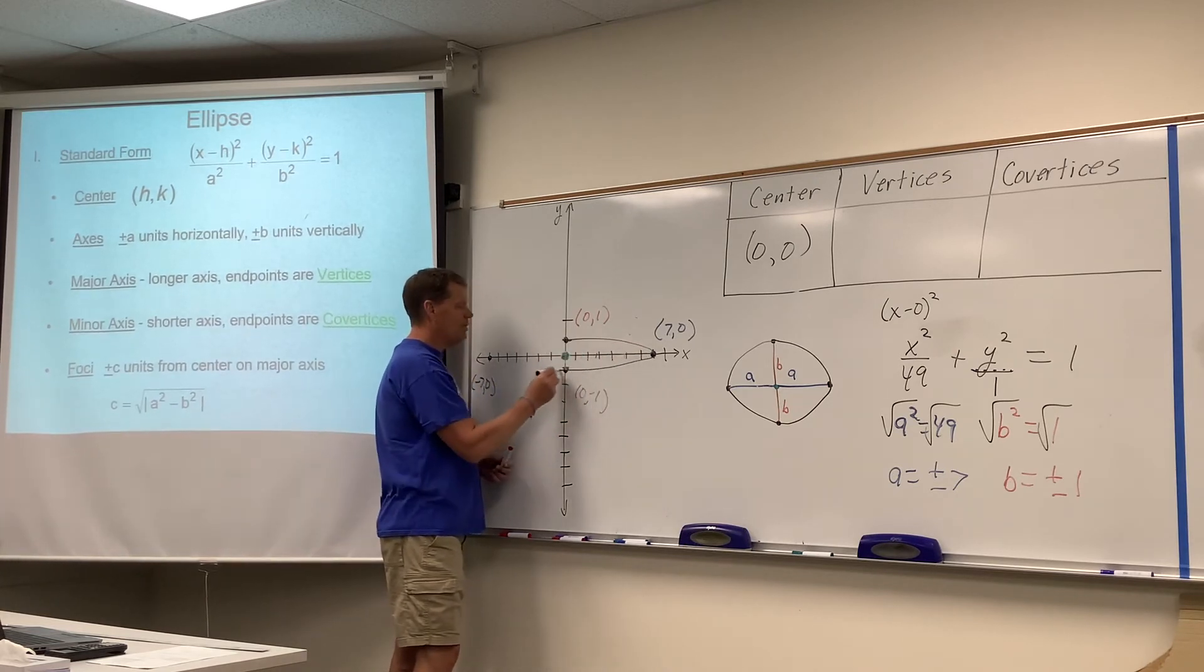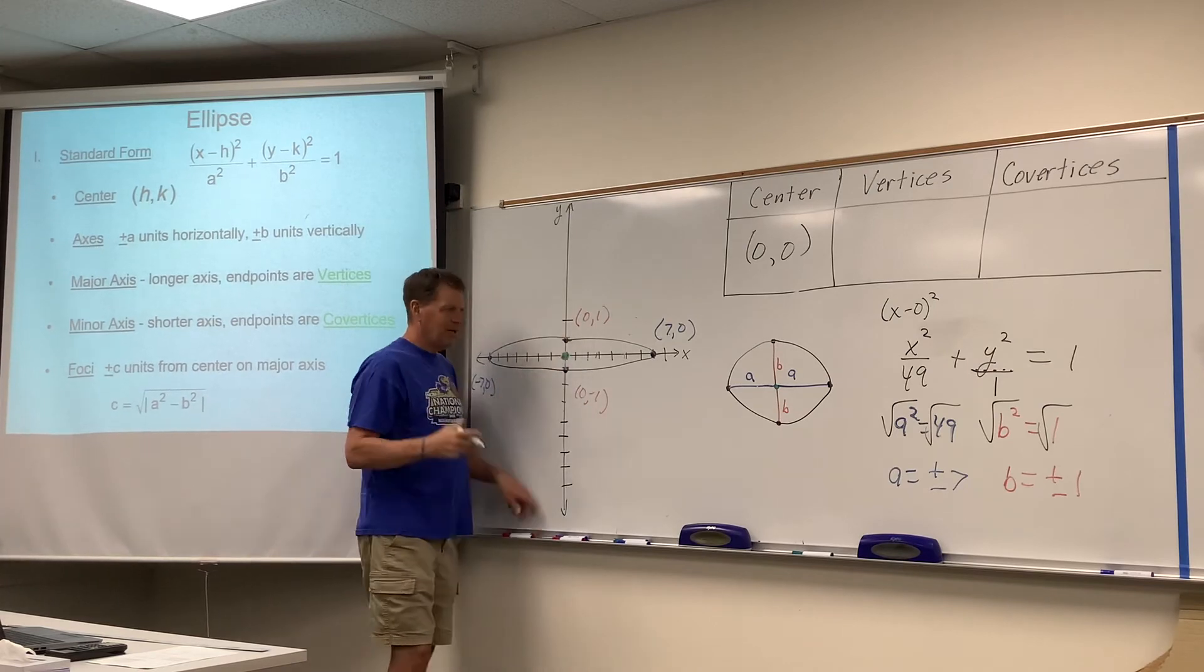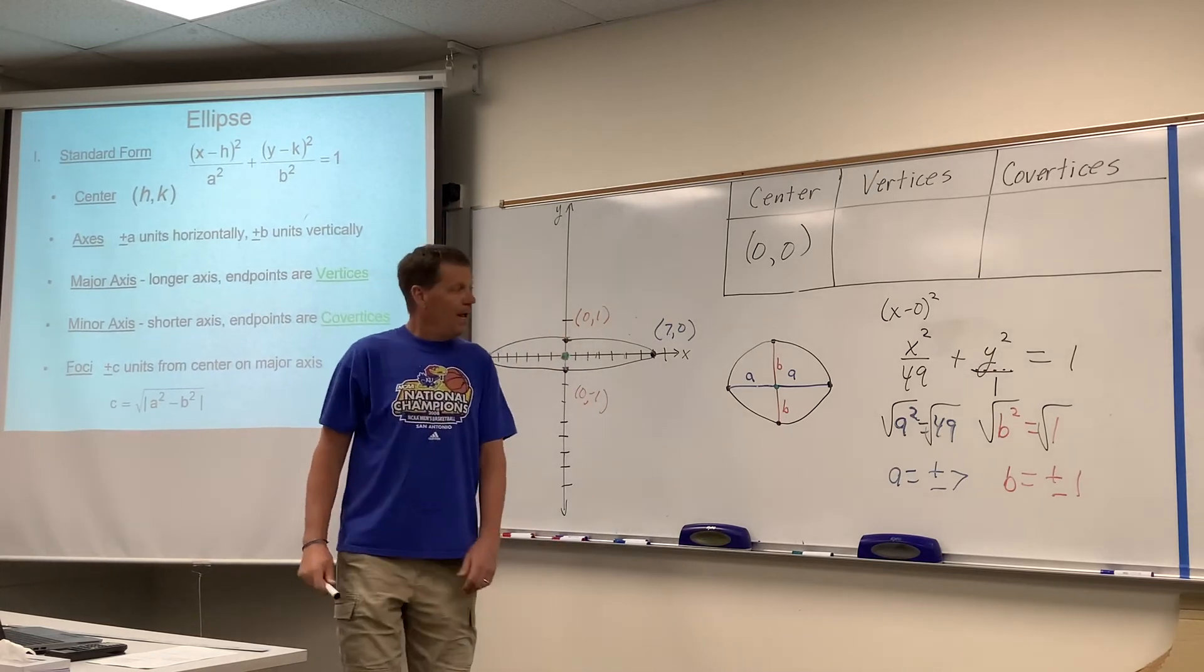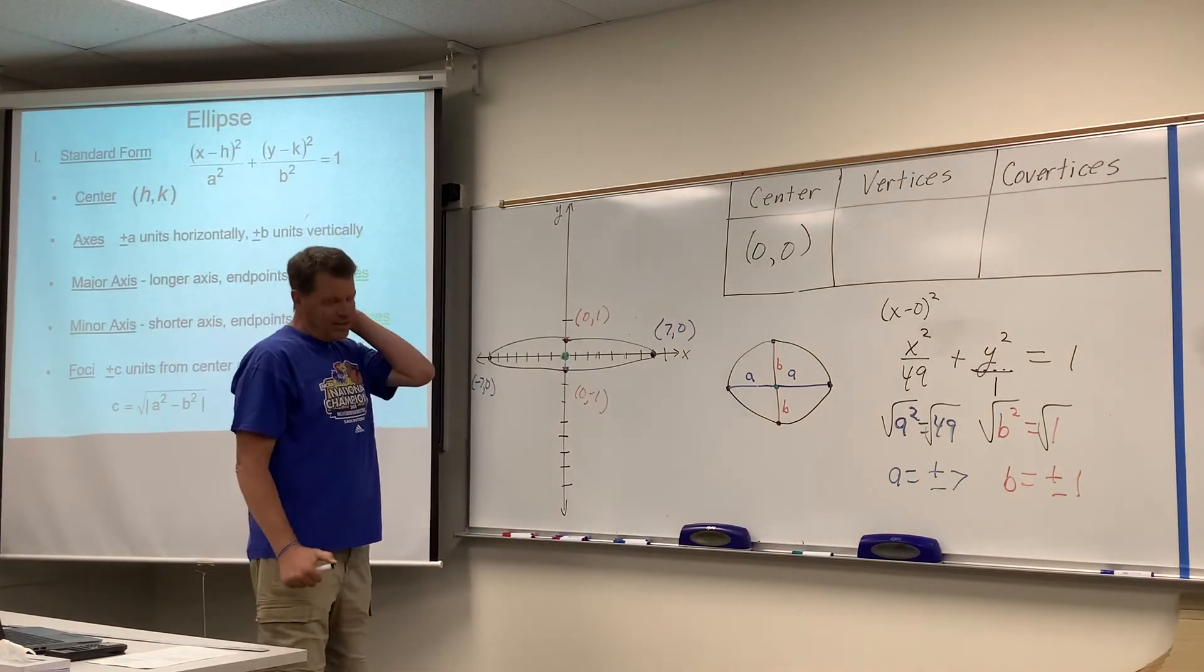And then we can graph our ellipse, this elongated circle that's been kind of smashed a little bit. And now let's start talking about vertices and co-vertices.